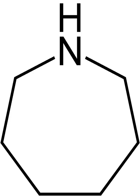A heterocyclic compound or ring structure is a cyclic compound that has atoms of at least two different elements as members of its rings. Heterocyclic chemistry is the branch of organic chemistry dealing with the synthesis, properties, and applications of these heterocycles. Examples of heterocyclic compounds include all of the nucleic acids, the majority of drugs, most biomass, and many natural and synthetic dyes.